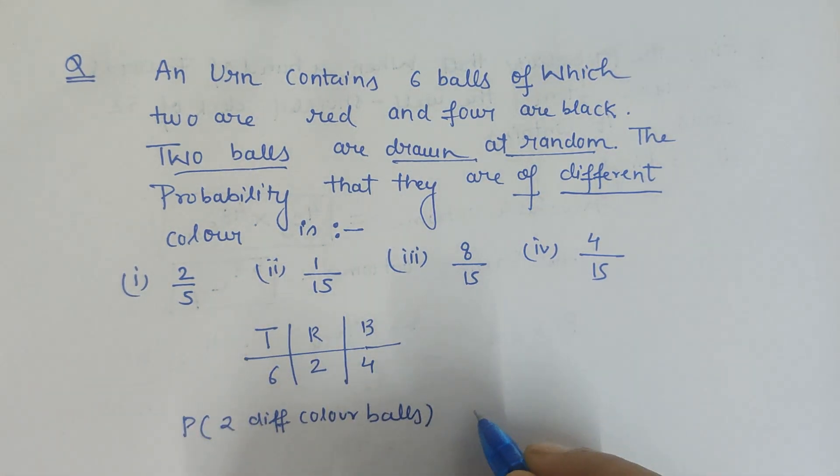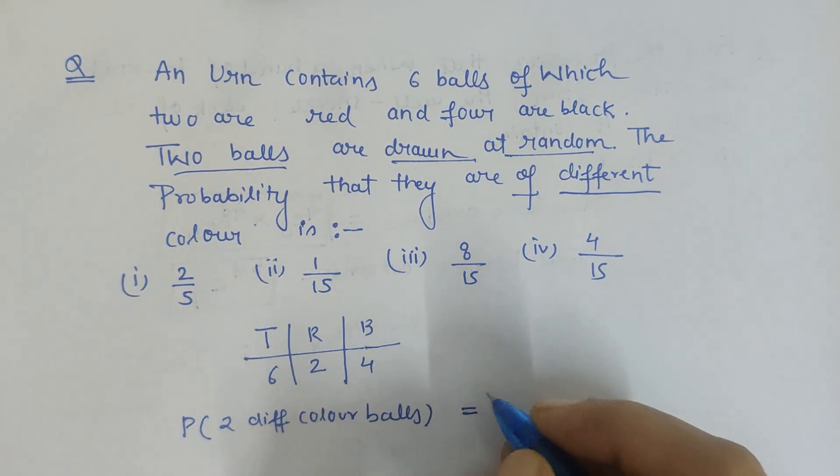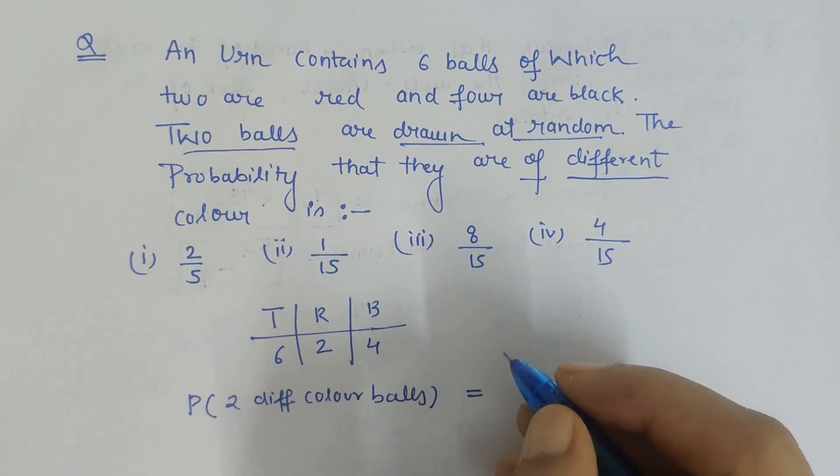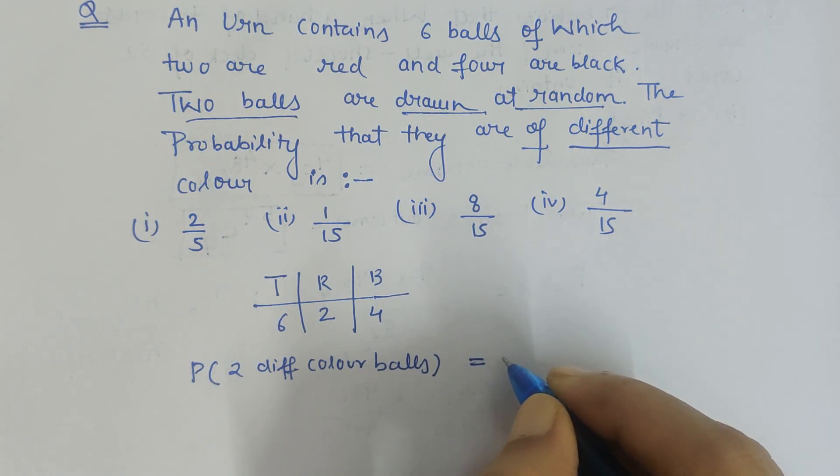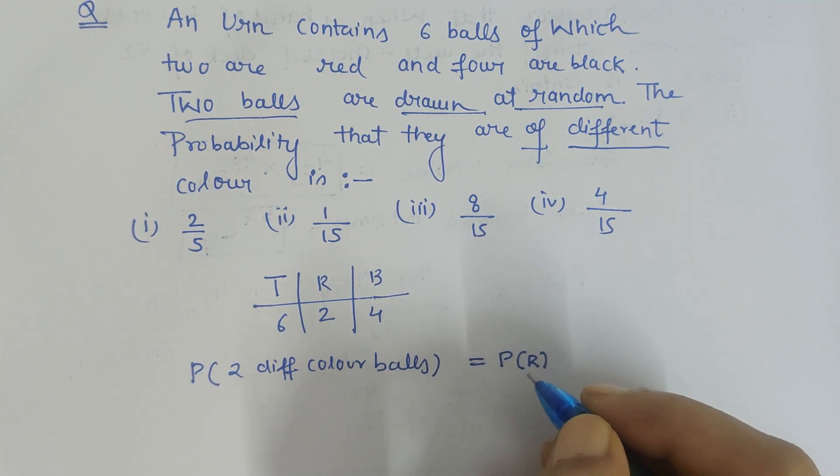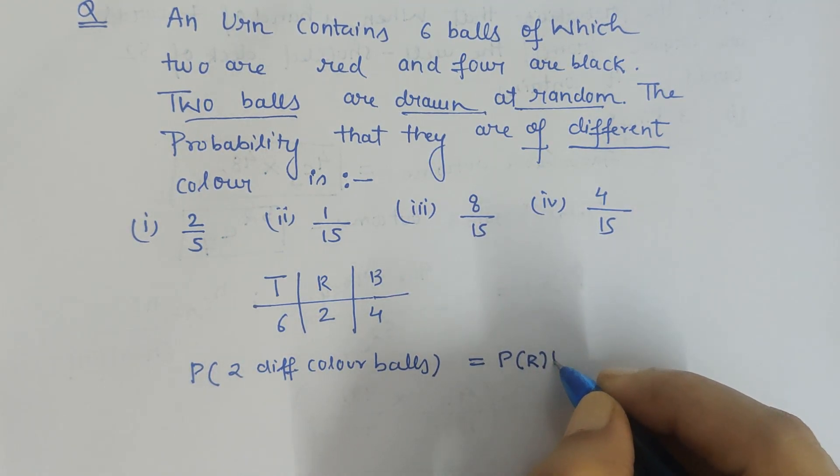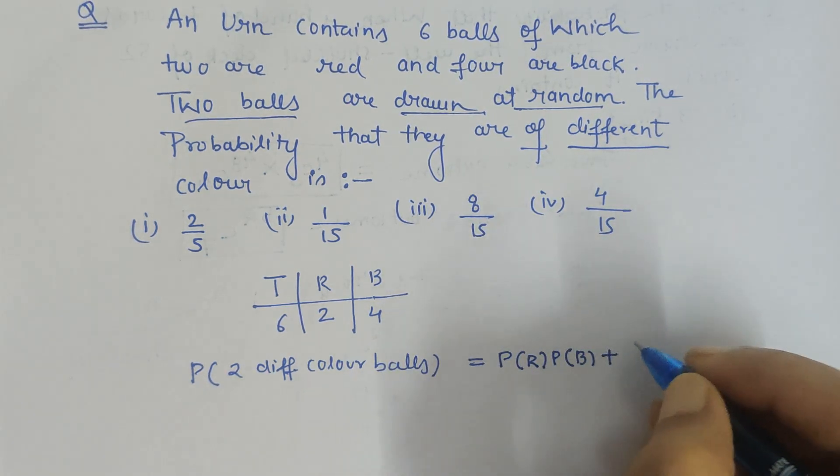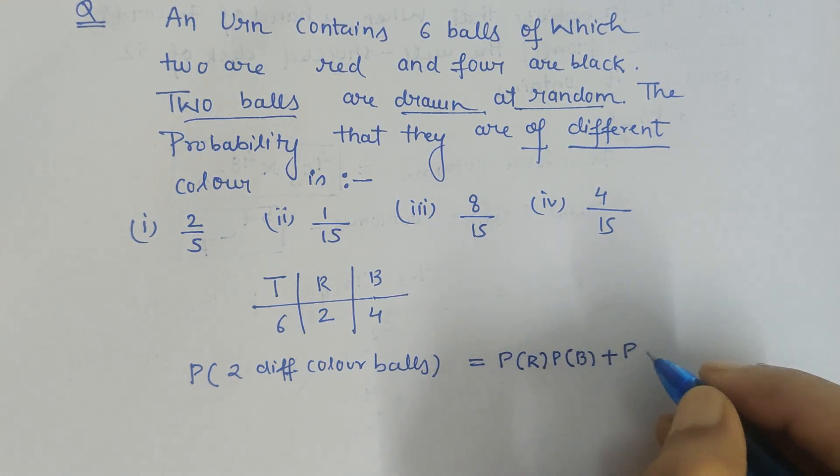Let us say the first ball drawn is red, so probability of getting a red ball in the first drawing, then probability that the ball drawn is black in color. Or it might be possible that in the first trial the ball drawn is black and in the second trial the ball drawn is red.